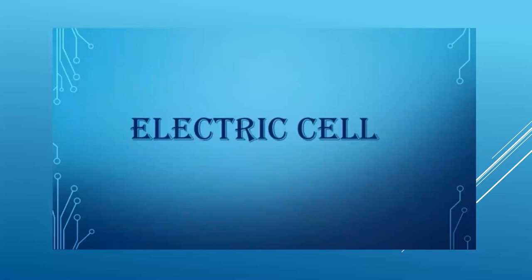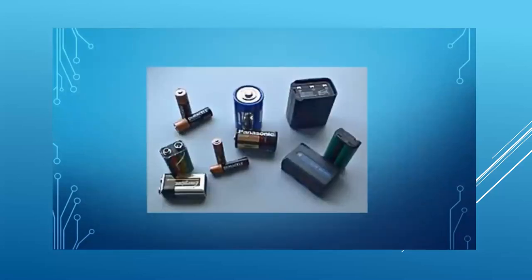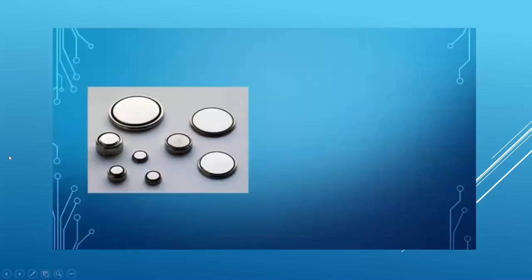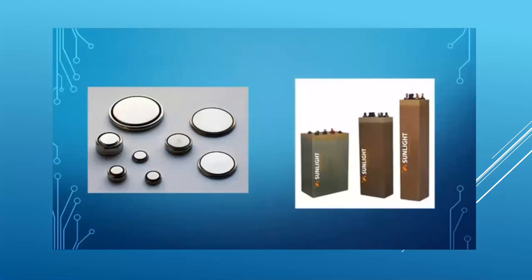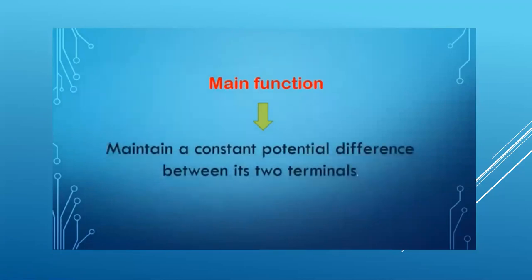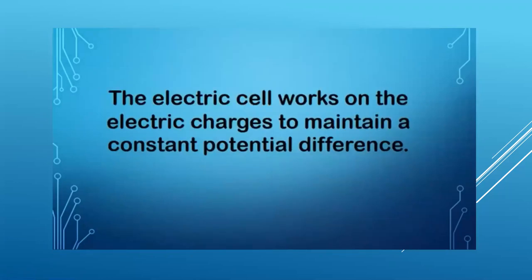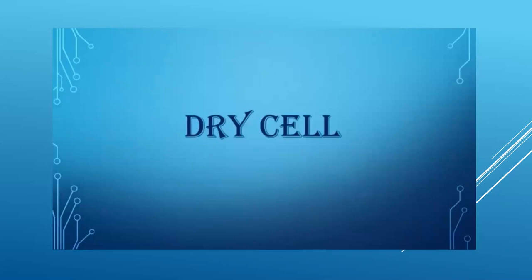Now let's learn about the electric cell. A source is required to produce a uniform flow of charges in a circuit — such a device is an electric cell. Various types of electric cells are available today, used in a range of machines from wristwatches to submarines. You must be aware of solar cells. The main function of various electric cells is to maintain a constant potential difference between their two terminals. The electric cells work on the electric charges to maintain this constant potential difference.